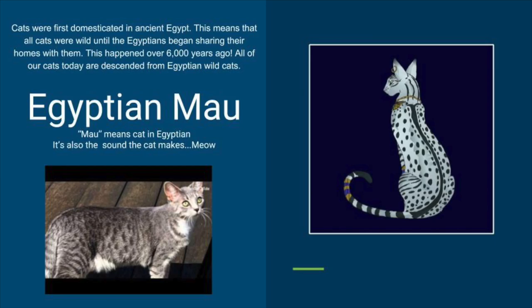The Egyptian Mau is the cat that is native to Egypt. Mau means cat in Egyptian. It's also the sound a cat makes. Mau.